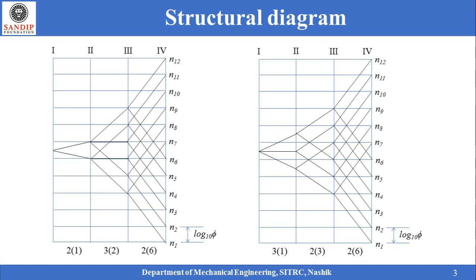We have to draw a structural diagram for all 18 structural formulae and then proceed to find out the best possible structural diagram. The method to find out the best possible structural diagram is called the ray method of optimization, which we are going to learn in the next lecture. Thank you.